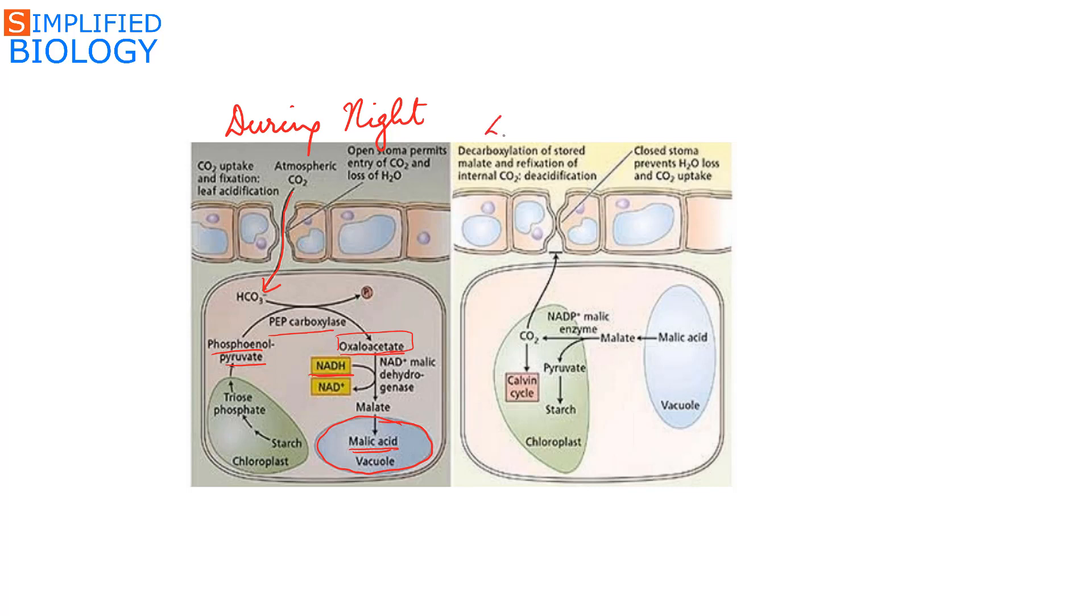During day, the malic acid is released from the vacuoles. It enters the chloroplast where it undergoes oxidative decarboxylation - means the carbon dioxide is released, NAD is reduced to NADH, and pyruvic acid or pyruvate is formed. The carbon dioxide that is released enters the Calvin cycle to form sugar.